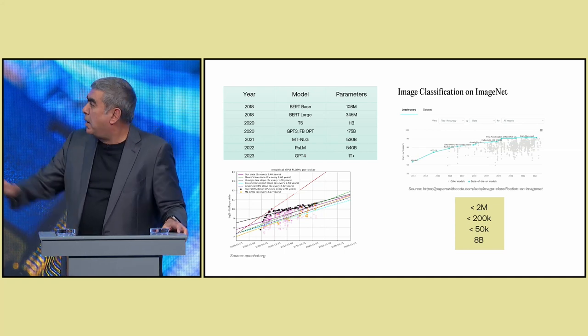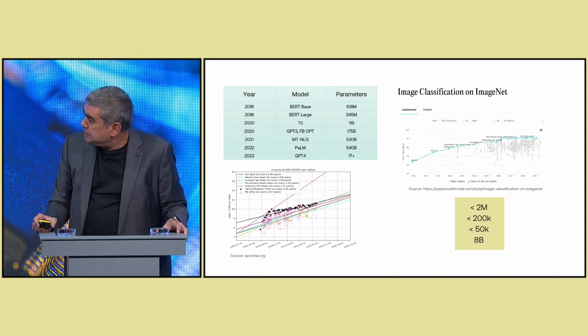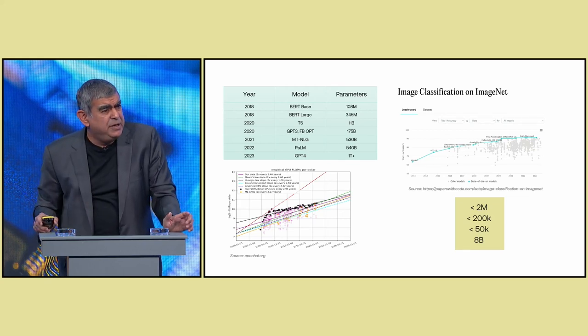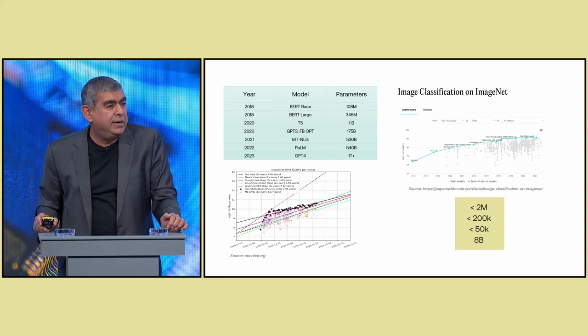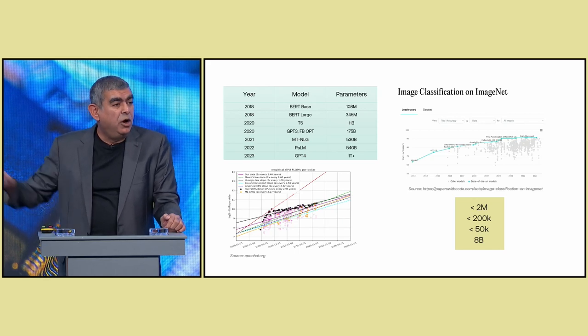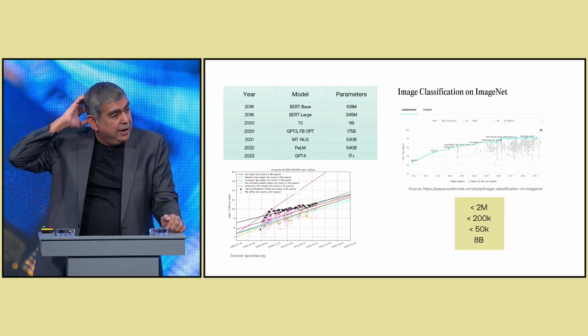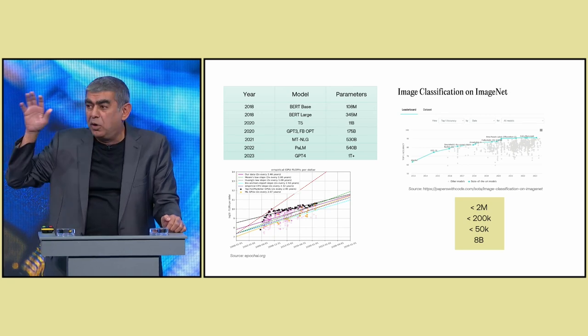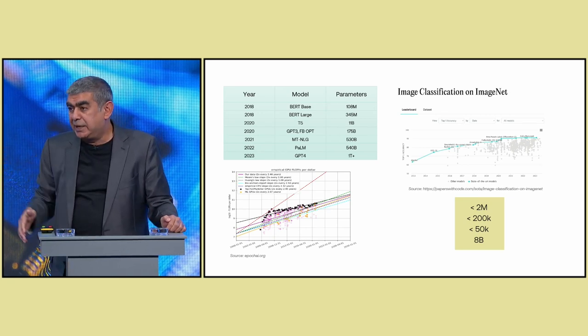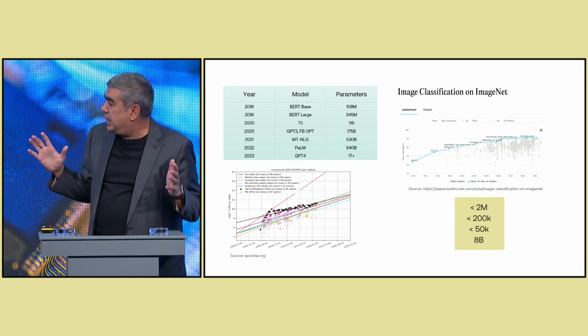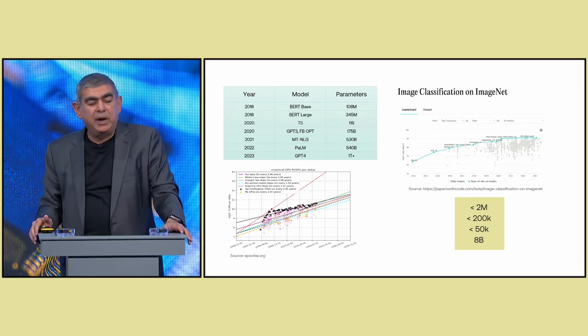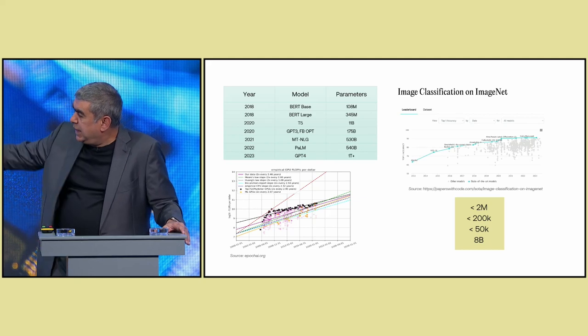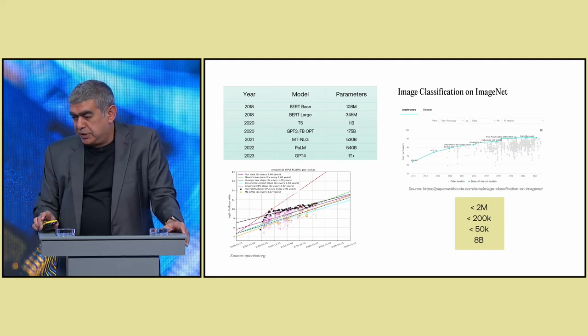But the most stunning thing, if you think about the scale of change in AI: up there, I have AlexNet, the computer vision network that broke open this field 10 years ago, is now not even in the top 300 computer vision systems. There are more than 300 systems that are more accurate, more powerful than AlexNet was. So the scale of change here is hard to comprehend.